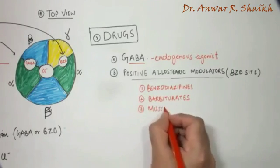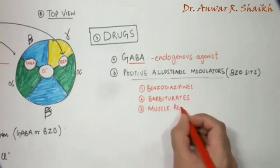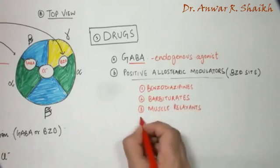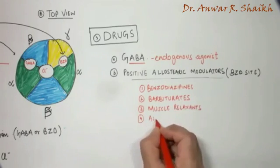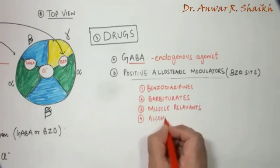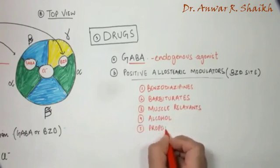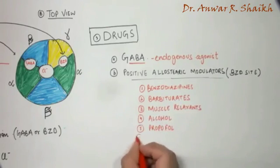And the third category, that is the muscle relaxants. And also alcohol acts on this site, and some other allosteric drugs like propofol and etomidate, etc.